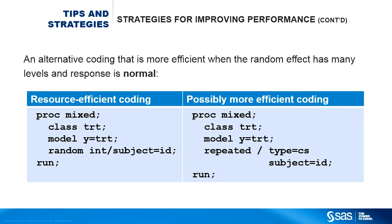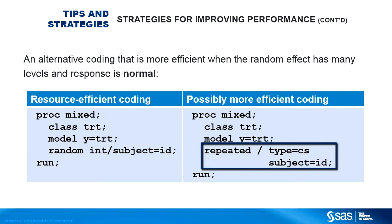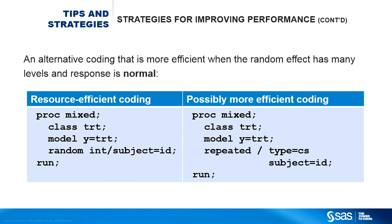An alternative way of coding a more efficient model is to use the REPEATED statement with a CS covariance structure. A random intercept model in PROC MIXED is equivalent to a repeated model with a compound symmetry covariance structure. Using the equivalent REPEATED statement model can sometimes be more computationally efficient, especially when the random effect ID has many levels.